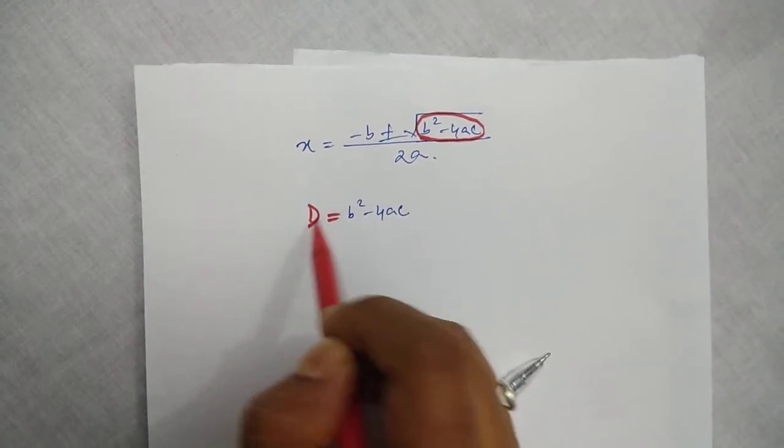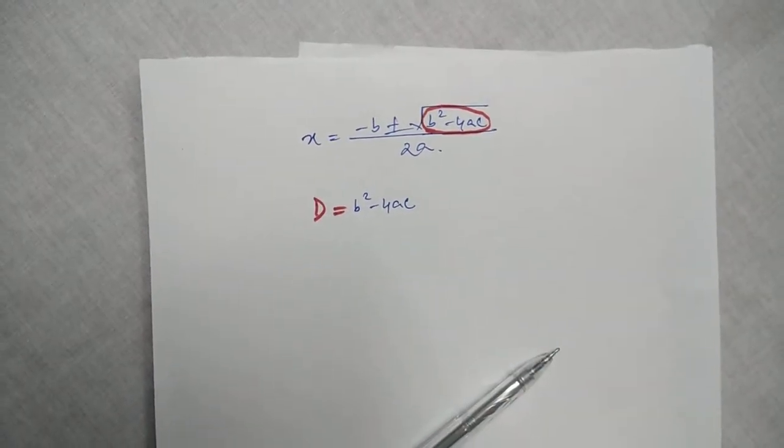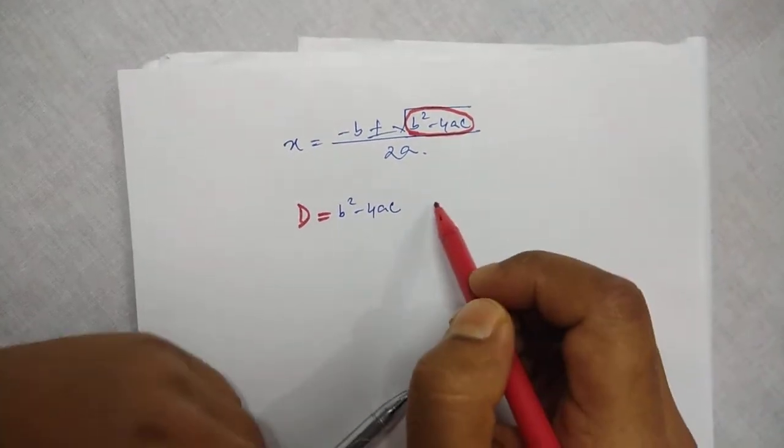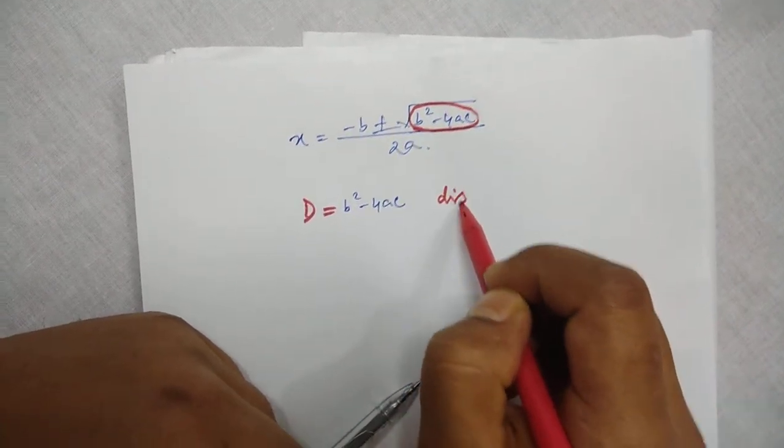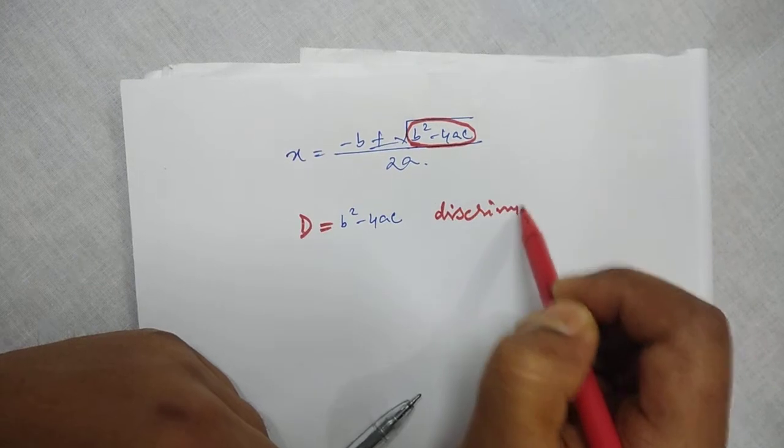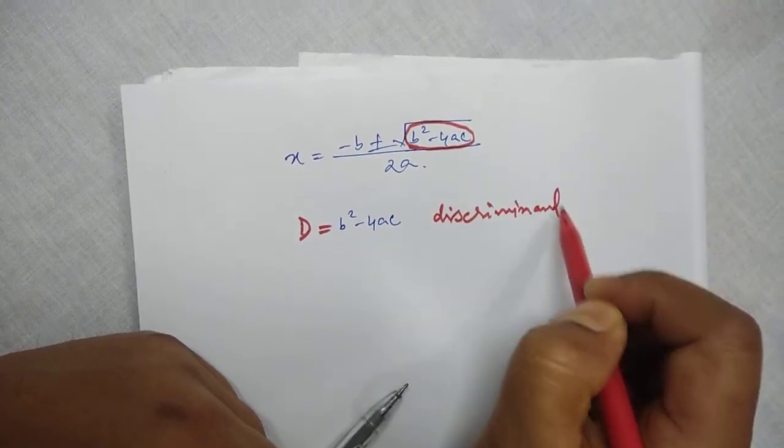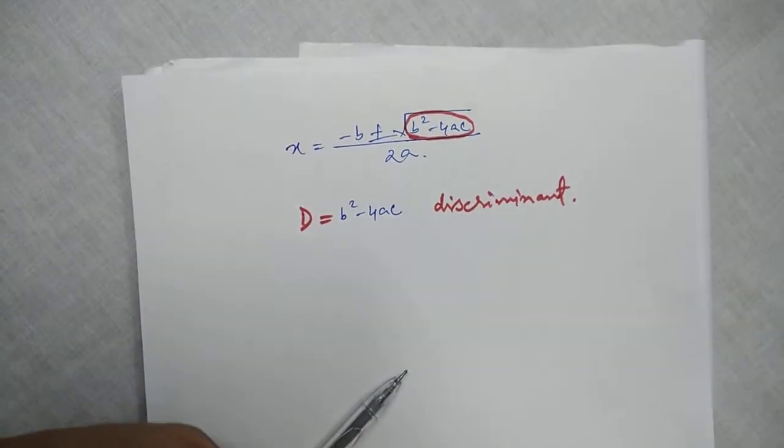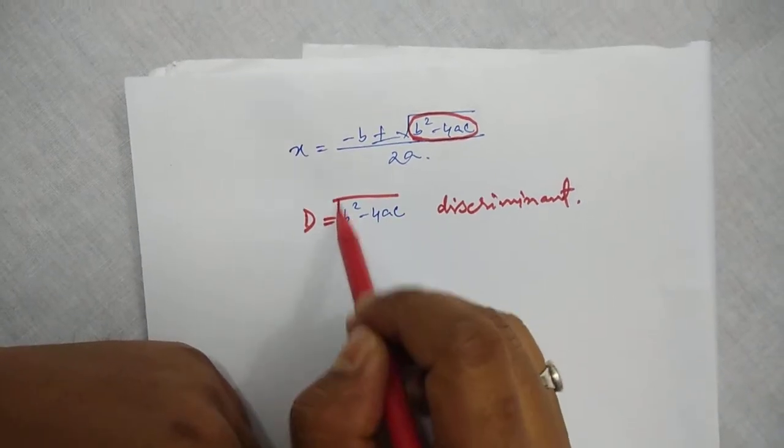We write it as D, the capital letter D means discriminant. This is why b square minus 4ac is important.